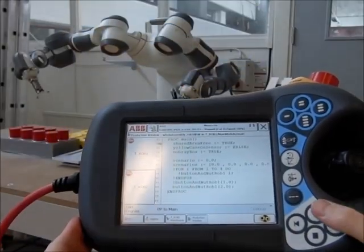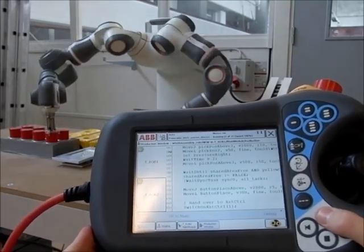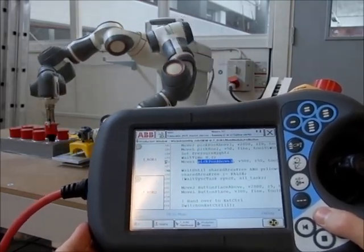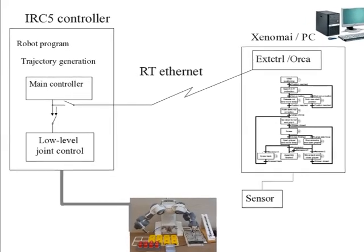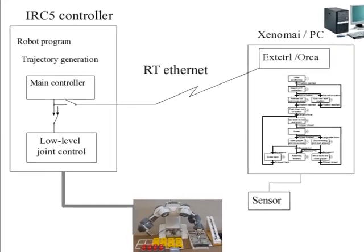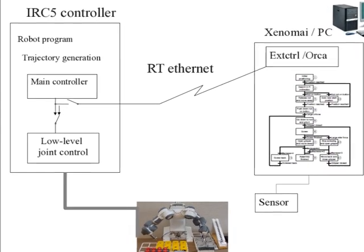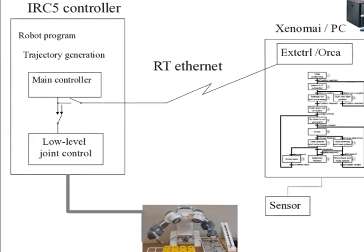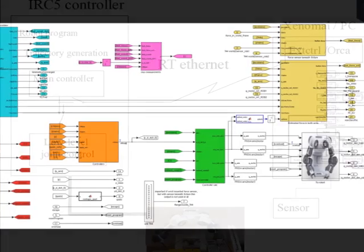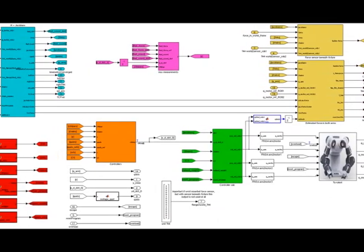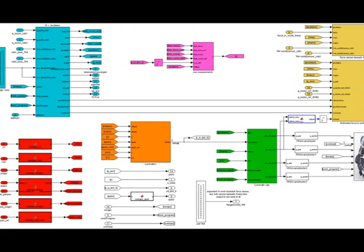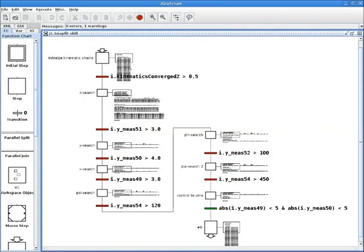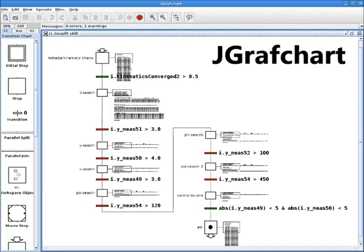The robot program is based on standard ABB rapid code. The native controller is used for position controlled operations. Whenever any external sensing is needed, the control is handed over to an external controller. The interface is called XControl and it makes it possible to send position and velocity references to the low level joint controllers. The XControl program is implemented in Simulink and an executable is generated using the real time workshop toolbox. The sequencing is performed using a state machine running in JGraphShart. It handles all configuration of the XControl program.